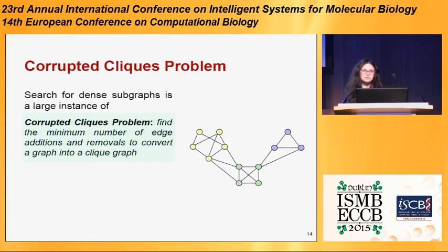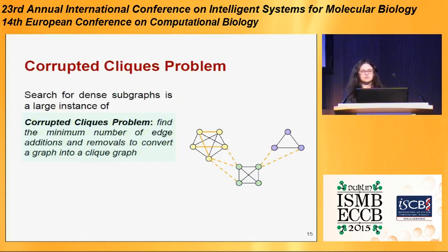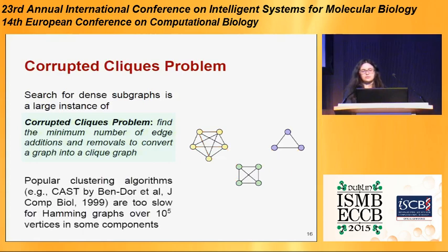This problem is well known — it's called the corrupted clique problem: we try to find the minimal number of edge edits to convert our graph into a set of cliques. This problem is applied in gene expression clustering, and for example the CAST algorithm was developed for this.